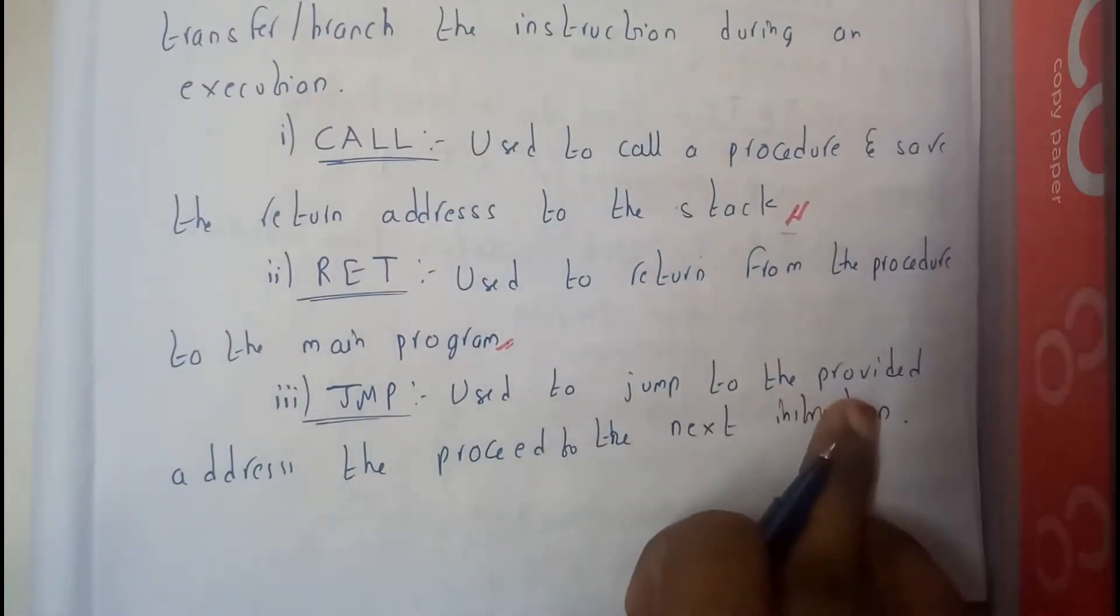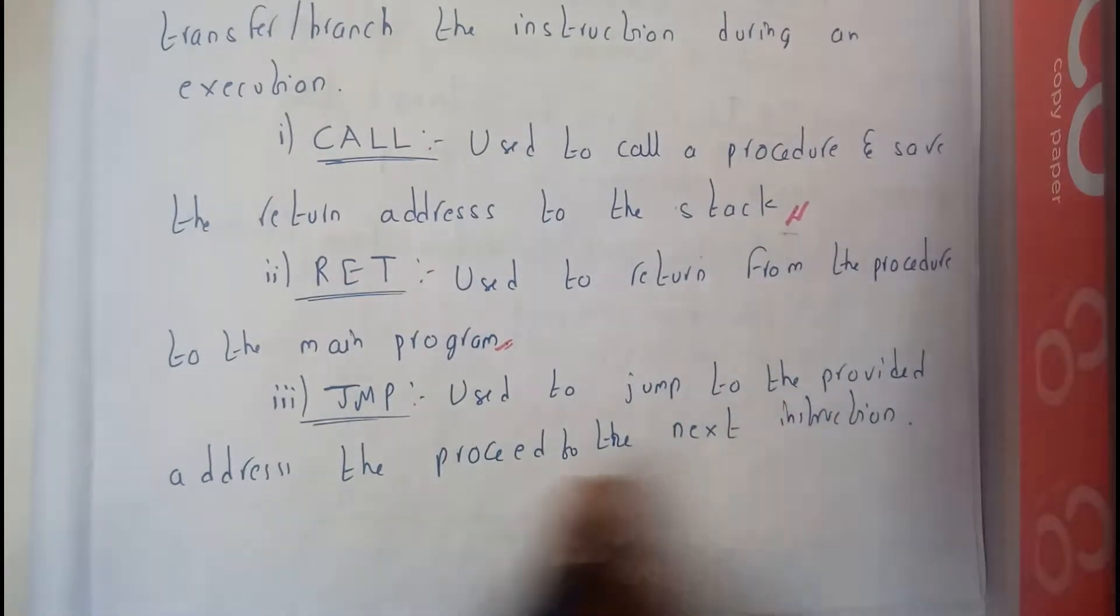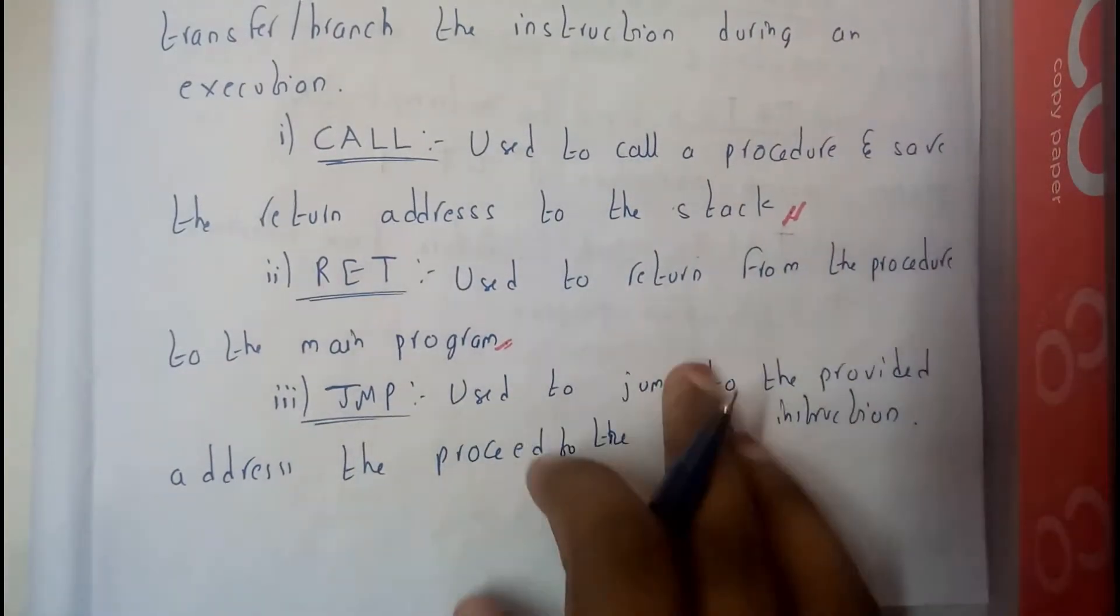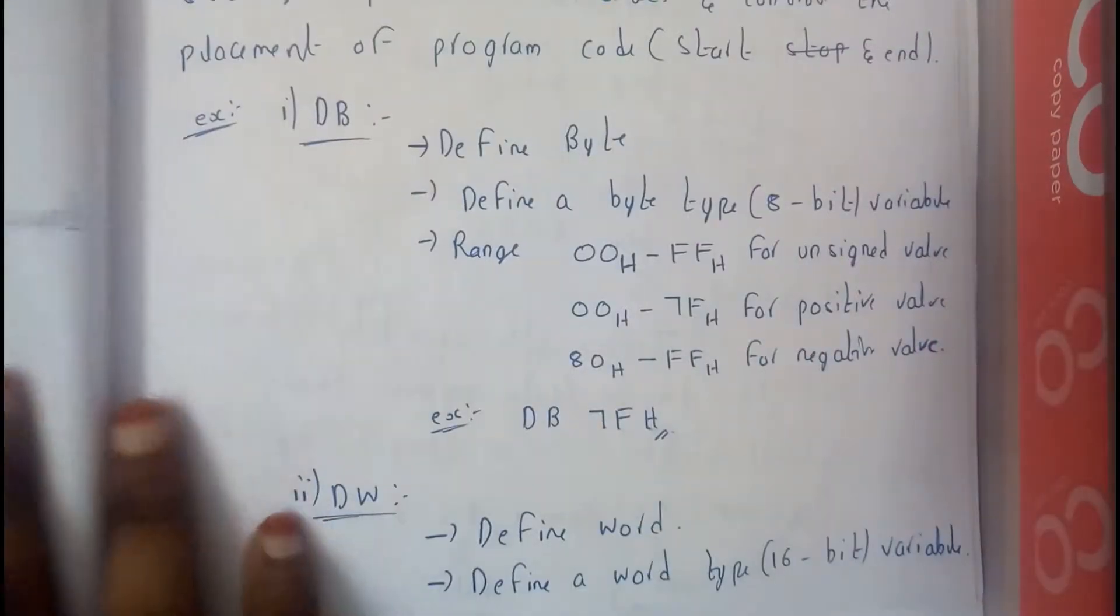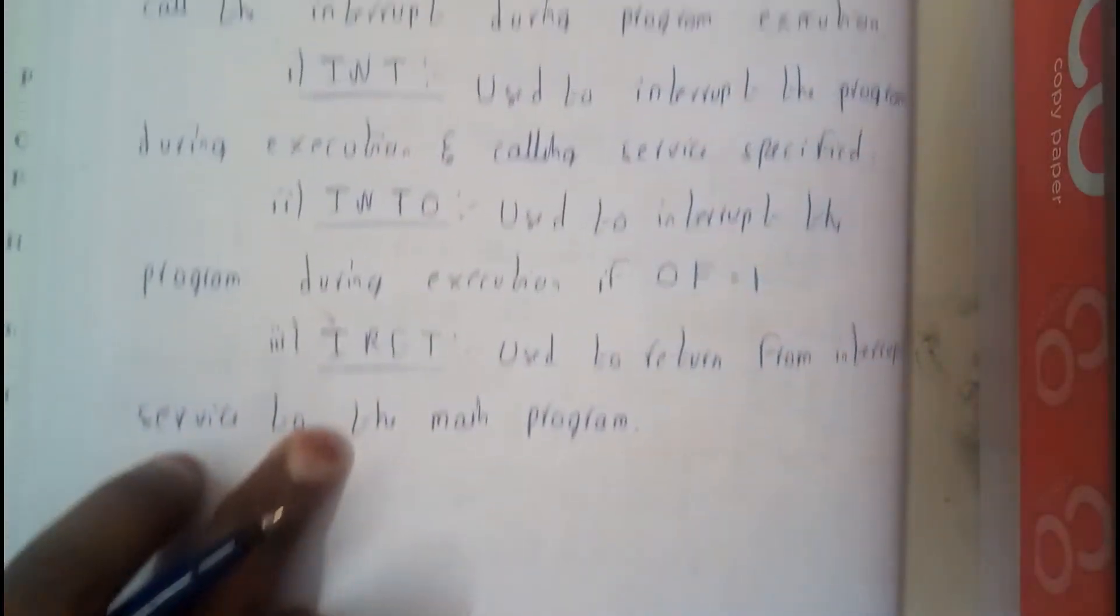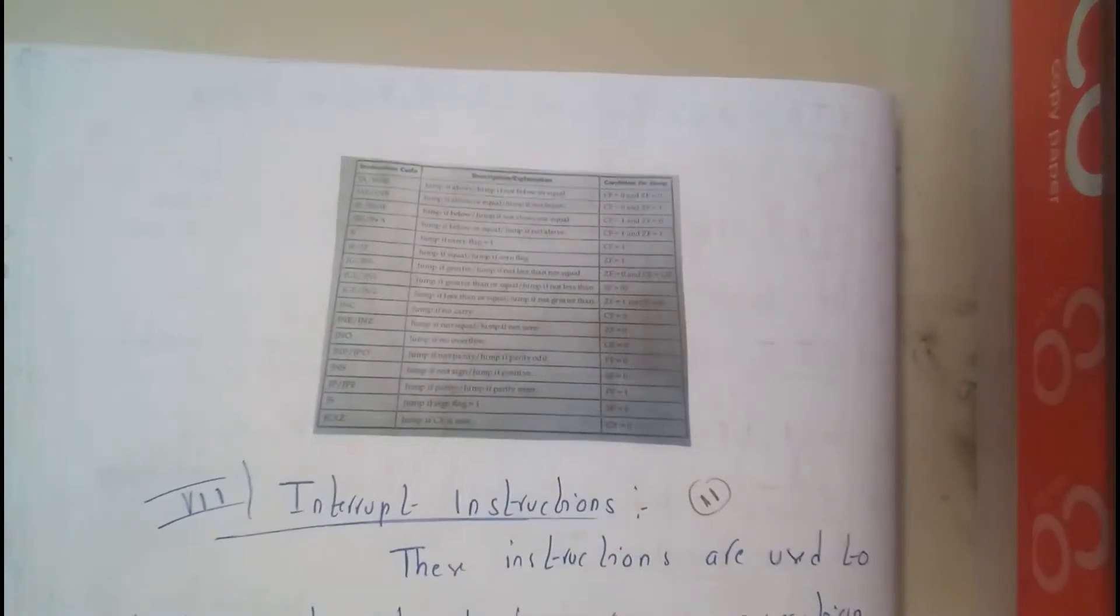And jump is used to provide the address location and it just jumps to that location as that is the next instruction to be executed. So I hope everyone got a small idea on this. Call is not a conditional thing, whereas jump is a conditional thing.